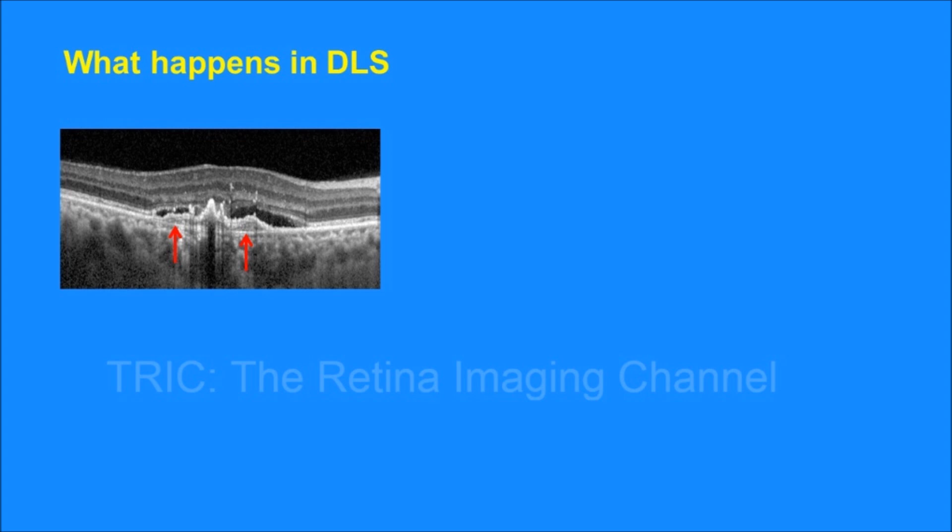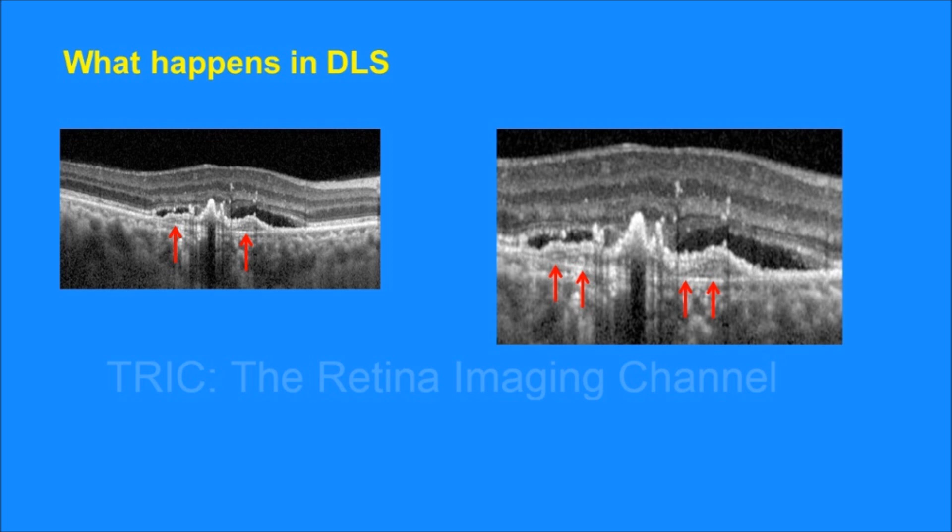Let's see how the DLS appears on OCT. In this image we see that there is an elevation of RPE. Now in usual PEDs there is no second line beneath the elevated RPE. But here in this picture there is a second line, marked by the red arrows, beneath the elevated RPE. This second line is called the double layer sign, and it has been created due to splitting of RPE from its basement membrane. The DLS is better understood in this blown out image.